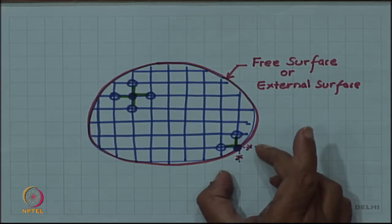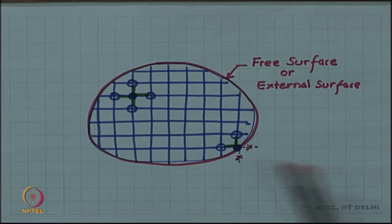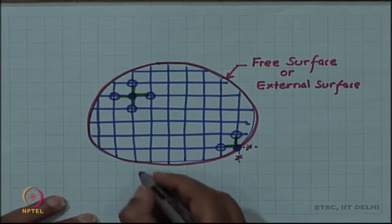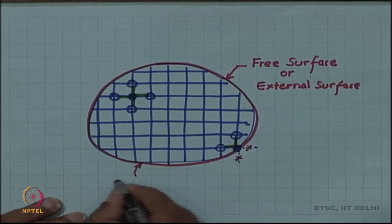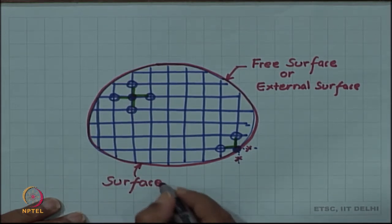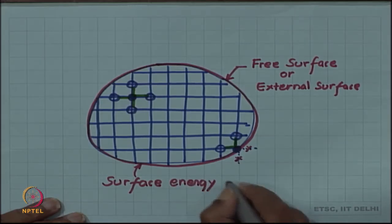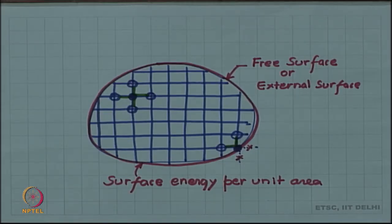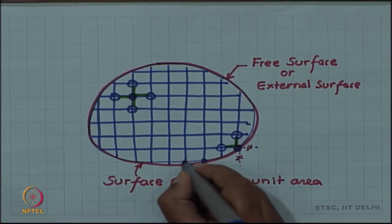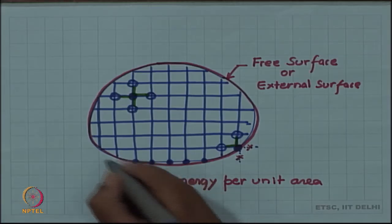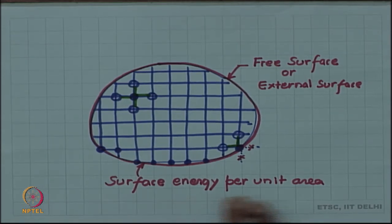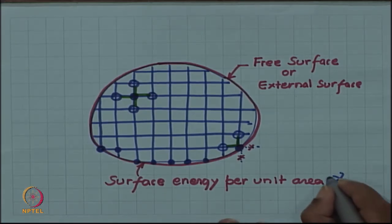Breaking of bonds requires energy. Because of the breaking of these bonds, extra energy is provided to the crystal, and that energy resides in this surface atom. Integrated over the entire surface, the higher energy of these surface atoms is what is called the surface energy of the crystal. This surface energy per unit area of the crystal — we will use the symbol gamma for this quantity.